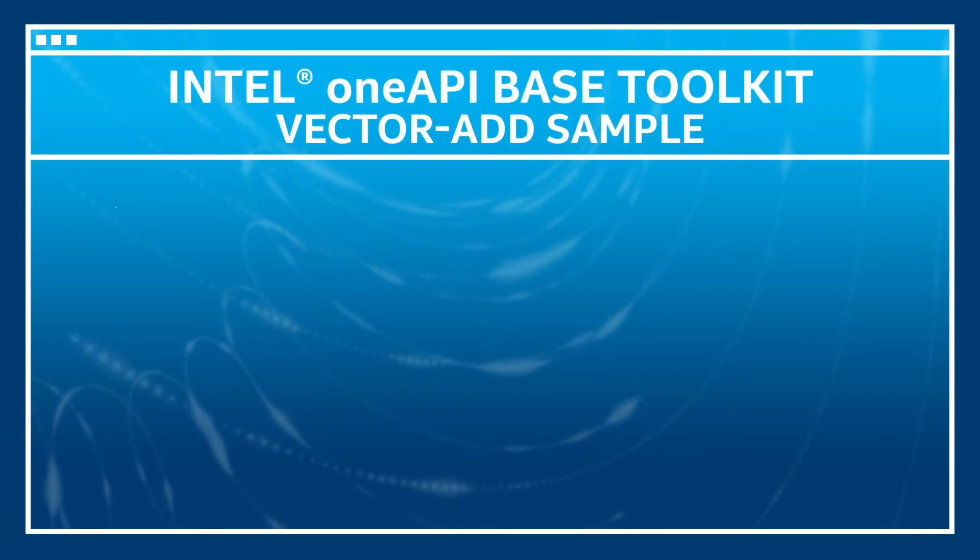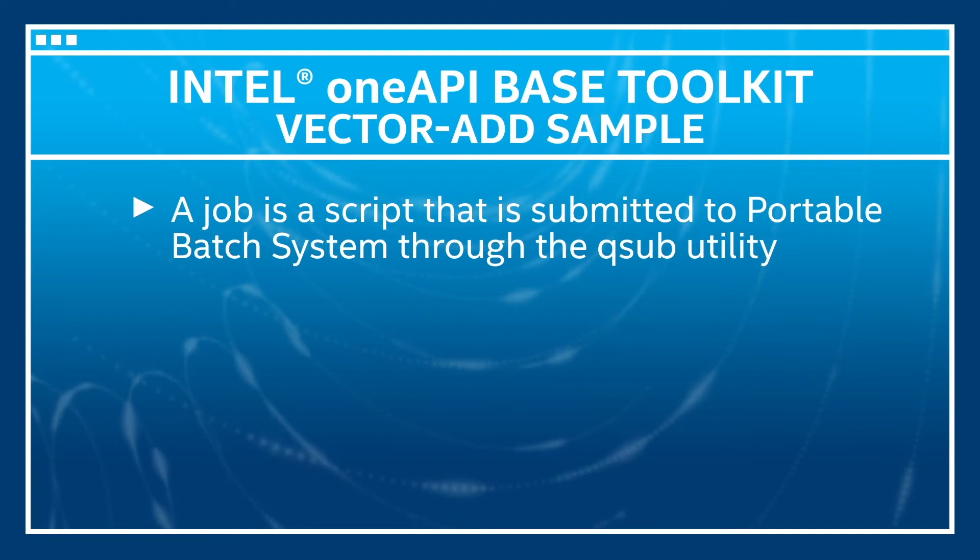Intel has provided a few sample codes to help you get started with the Intel OneAPI-based toolkit, and they are available in the links. Now let's go through one of these code samples, the vector add. This will give you an idea of how to submit jobs for building and running the sample using the portable batch system. The job is a script that is submitted to PBS through the QSub utility.